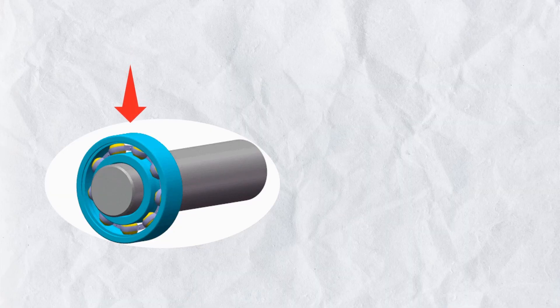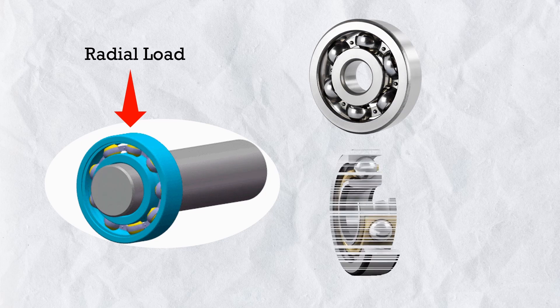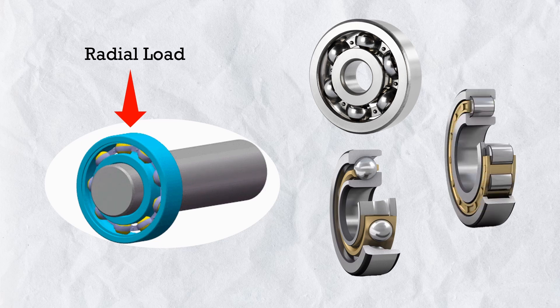And there is one more thing which makes it confusing: there is no one bearing for one particular application. There are multiple options of bearings for the same application. For example, in the same radial motion application, we can use a simple deep groove ball bearing, or we can also use an angular contact bearing, or we can also use roller bearings.